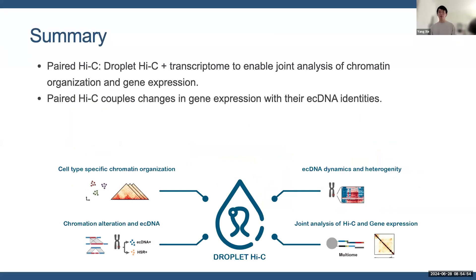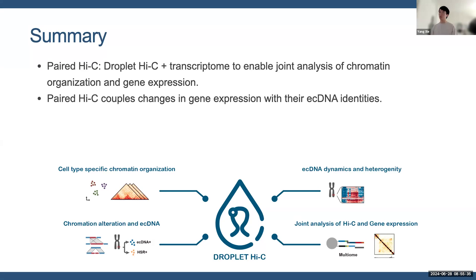In this last part, I briefly introduced the multiomic version of Droplet Hi-C and used it to couple gene expression with ecDNA copy number in the GBM-39 system. Through the whole talk, I hope I have convinced you that our method, Droplet Hi-C, is a highly efficient tool not only for revealing cell type-specific chromatin interactions, but also for interrogating copy number and structural variations including ecDNA. Combined with a deep learning-based model, we can show the dynamics of ecDNA in single cells under drug selection, which was largely unknown before. Finally, by including an RNA modality, we provide an opportunity to study how ecDNA contributes to gene expression.